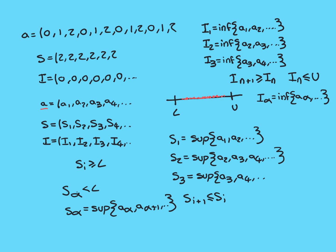We'll have a break here, and in the next video we'll move on to proving that in the case that the limit superior exists, it is the largest of the limit points of the sequence, and in the case that the limit inferior exists, it is the smallest of the limit points of the sequence.